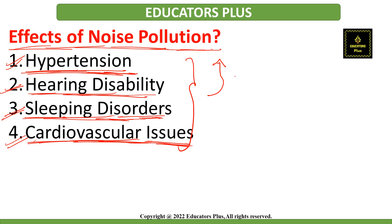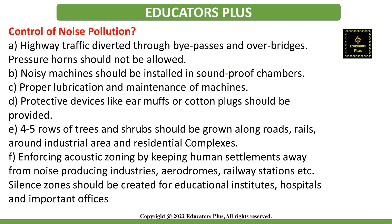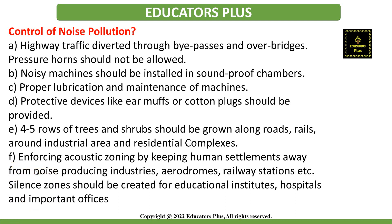Now let's discuss some of the measures to control noise pollution. There are various ways to do so. The first measure is that highway traffic should not be allowed to pass through towns and cities — it should be diverted through bypasses and over bridges. Pressure horns should also not be allowed at all.